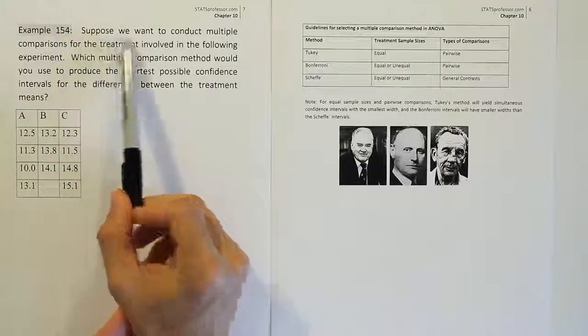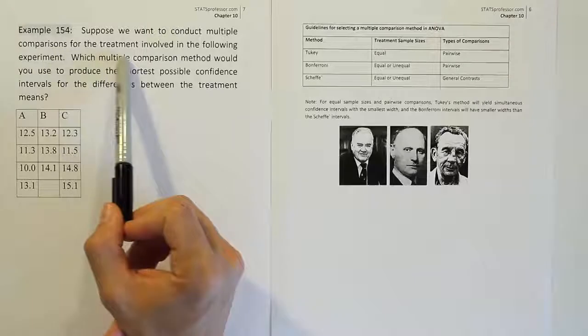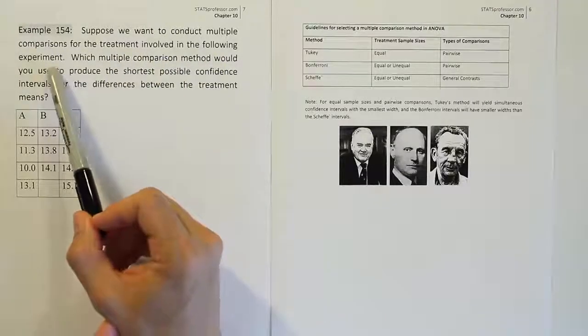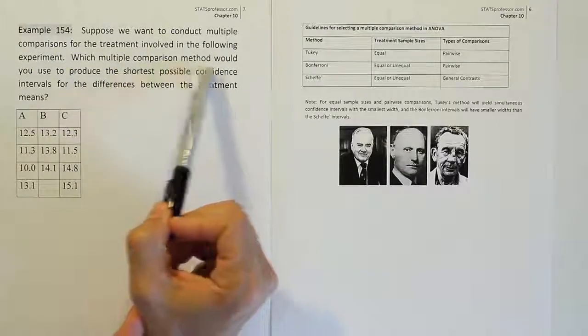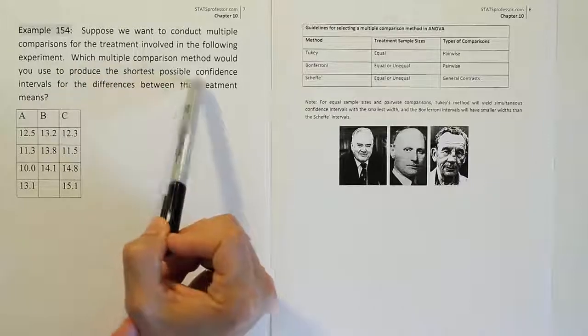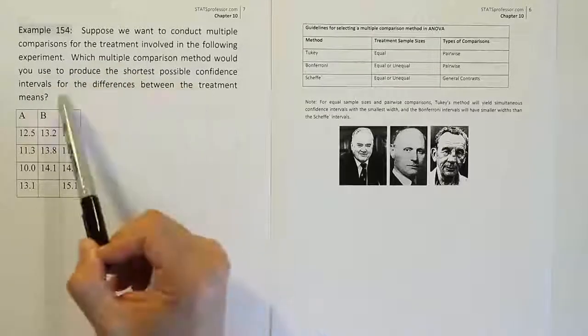Okay, so example 154. Suppose we want to conduct multiple comparisons for the treatment involved in the following experiment. Which multiple comparison method would you use to produce the shortest possible confidence intervals for the differences between the treatment means?